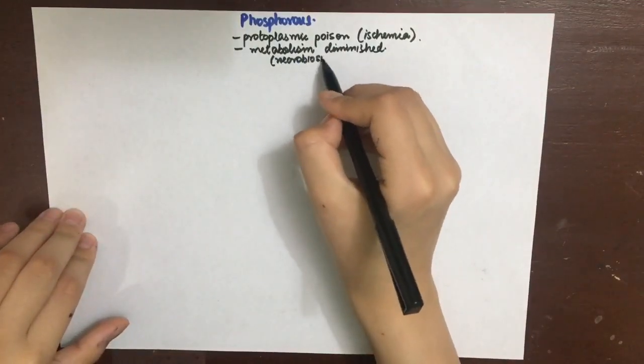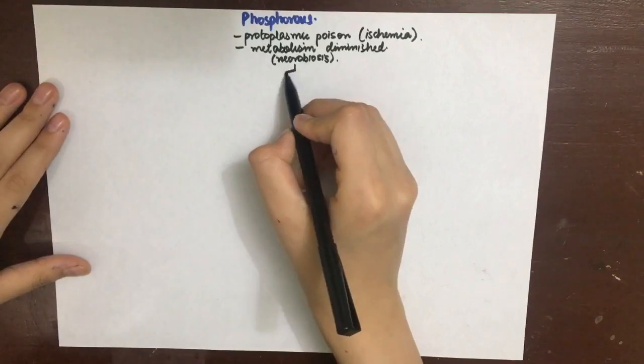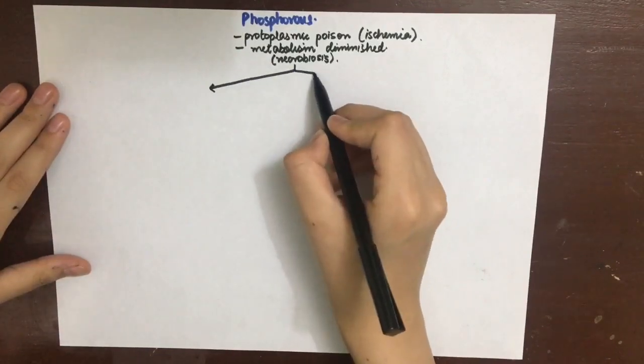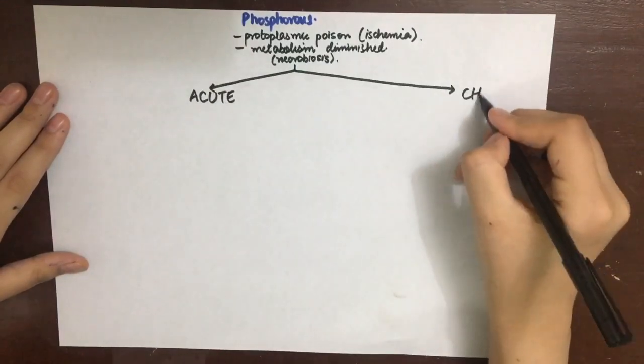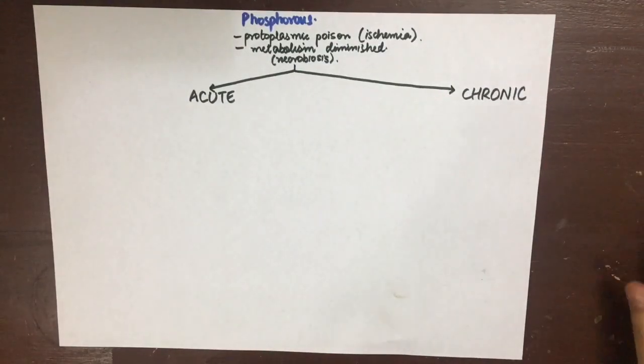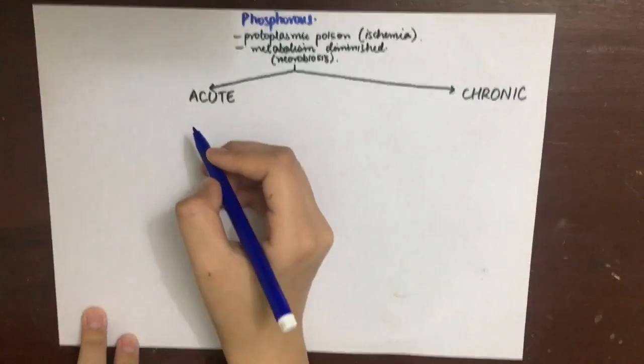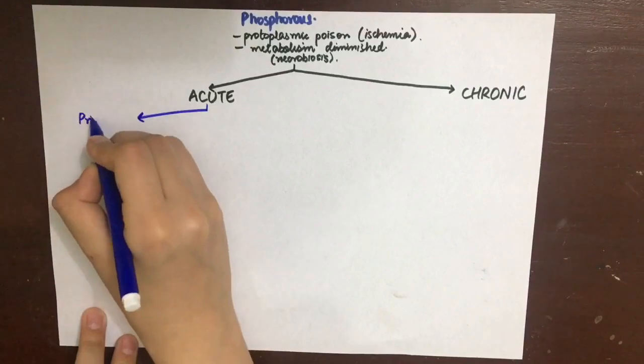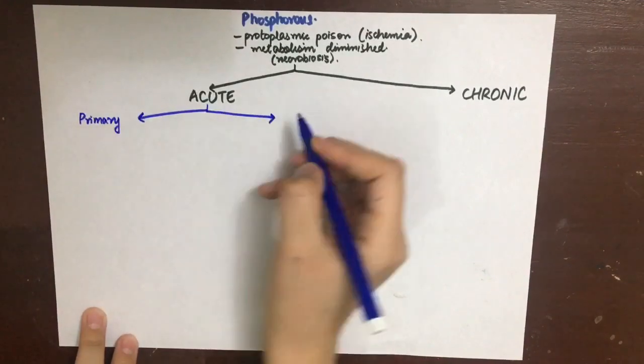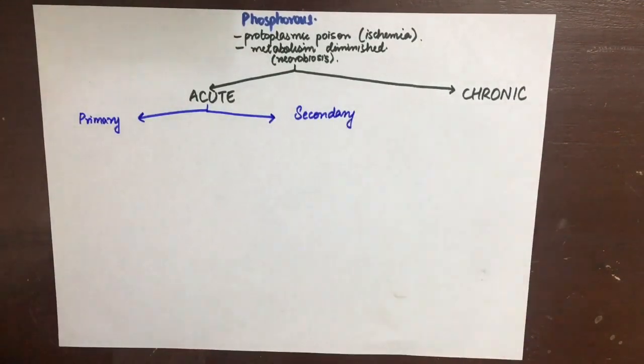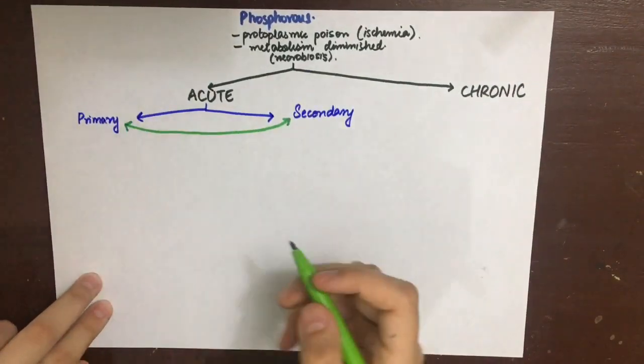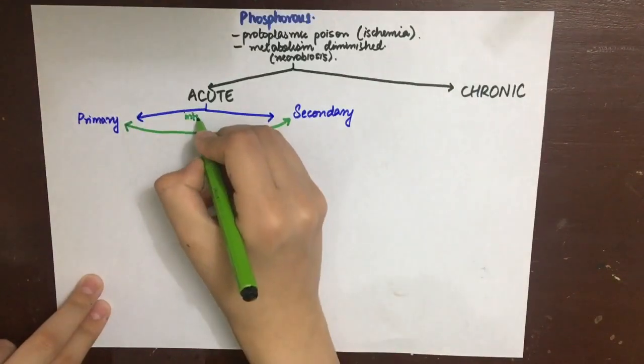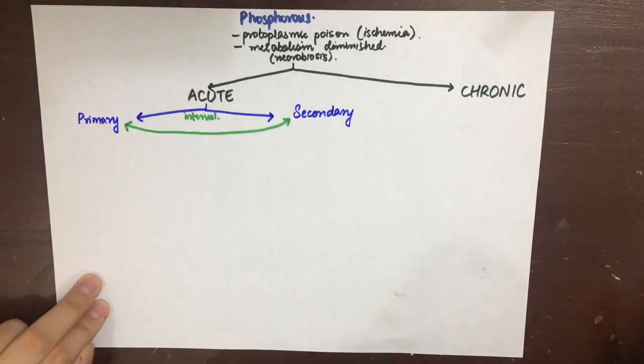In acute phosphorus poisoning, we have two phases of symptoms: primary and secondary. In between them there is an interval of remission of about two to three days. Remission is the time period when the patient shows some betterment, but then the same symptoms are observed again.